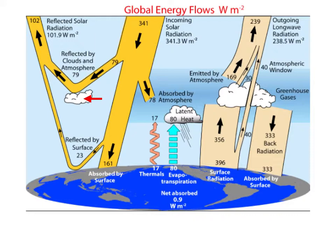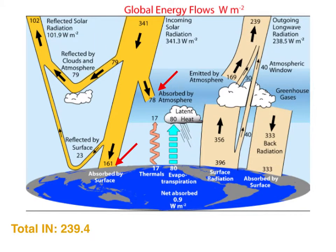A good bit of it bounces off clouds and other reflective things in the atmosphere — it doesn't get to the surface. And of the part that reaches the surface, some part is reflected off snow and ice and other reflective things down there. So there's a total reflected quantity — quite an appreciable quantity — which never has anything to do with warming the Earth. Then there's the absorbed portion, made up of two parts.